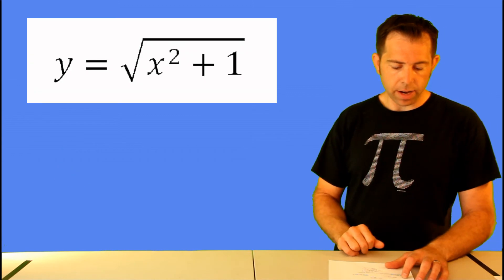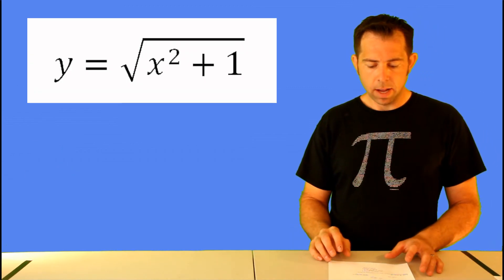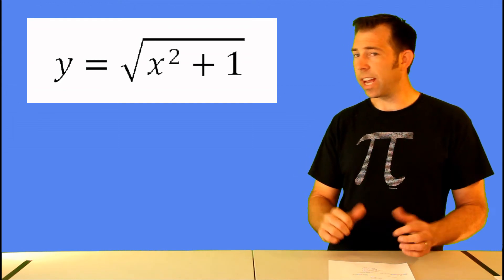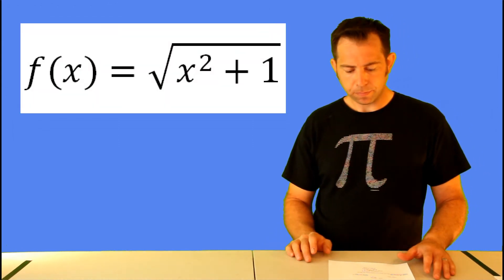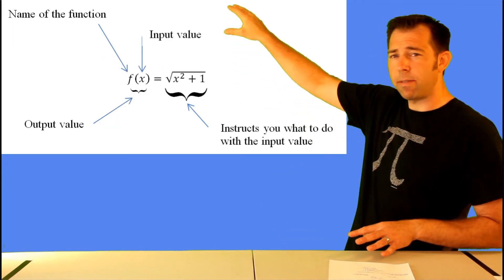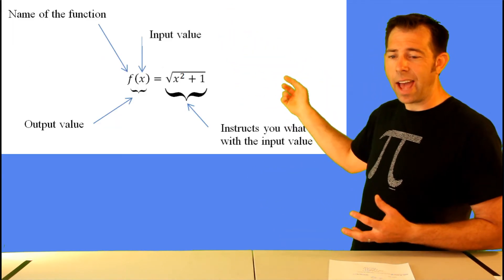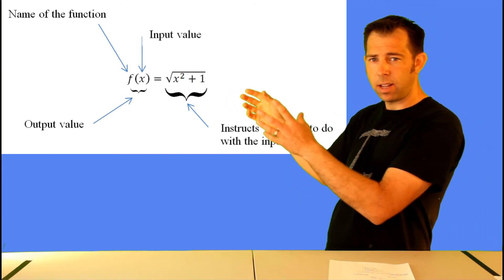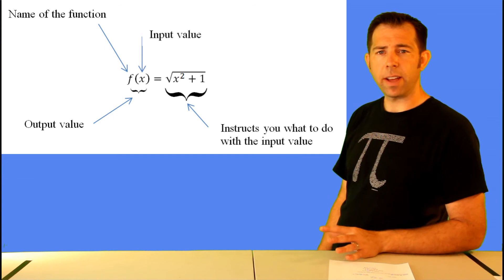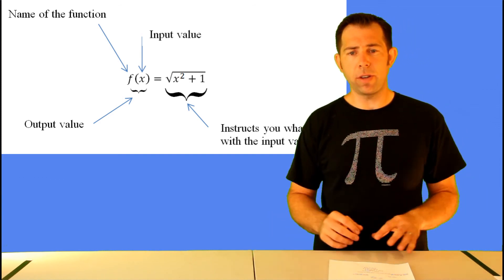For example, here's a function where y is a function of x. And we have y equals the square root of x squared plus one. Well, that can be written as f of x is equal to the square root of x squared plus one. So the name of the function is f. x represents the input value. f of x represents output of the y-value. And the square root of x squared plus one, that just tells you what to do.